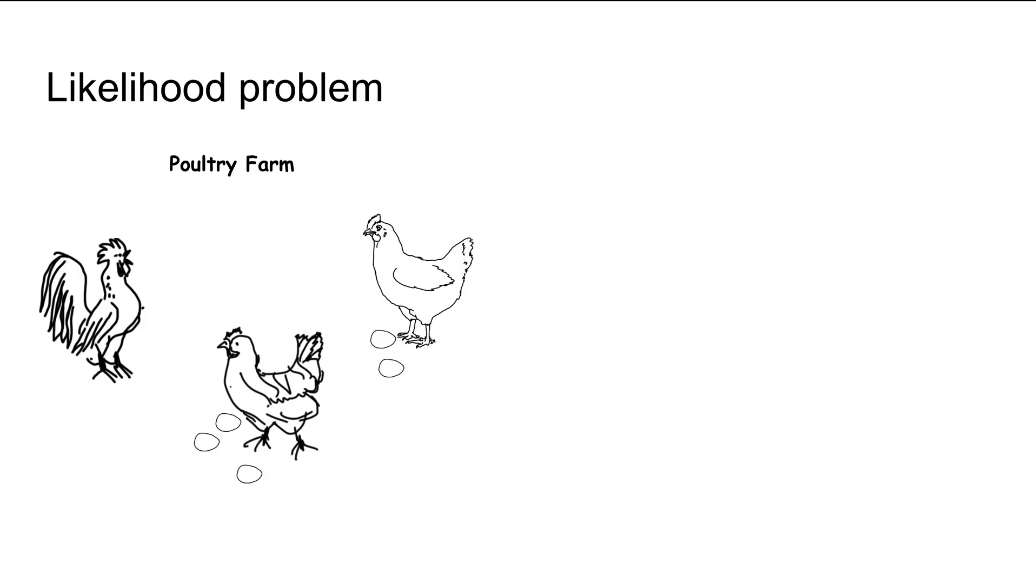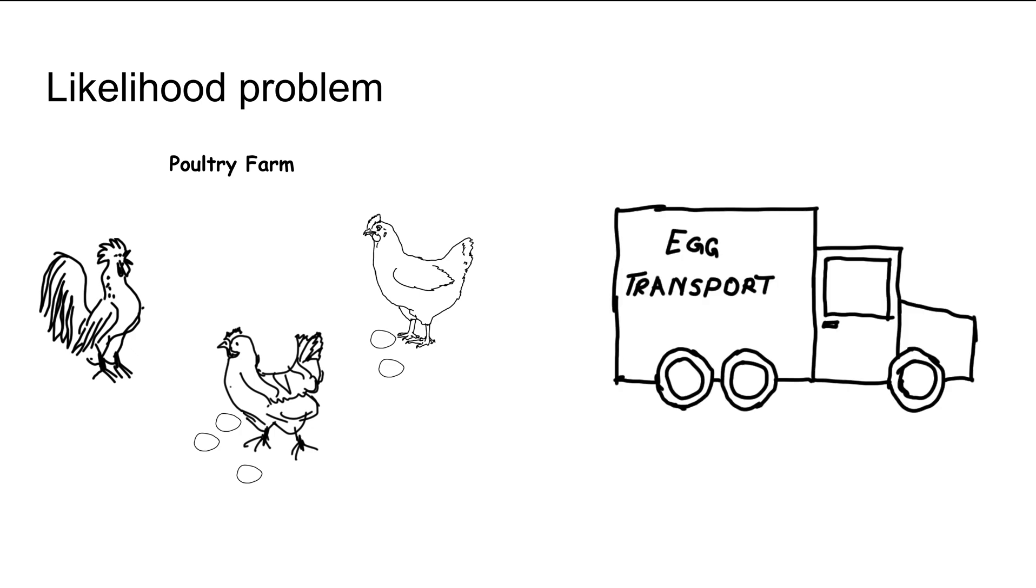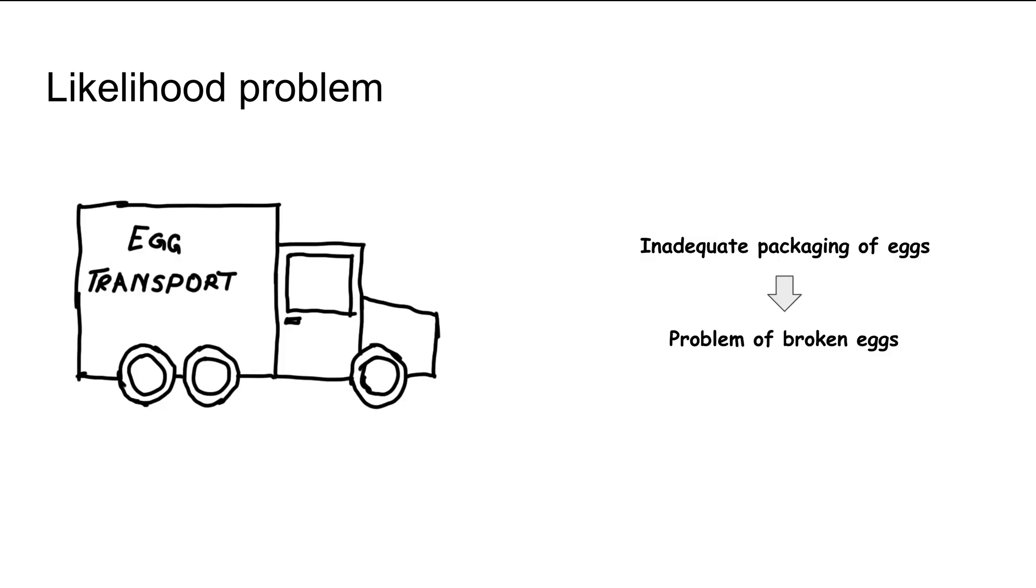In Part 1, let's imagine a poultry farm where the company has to collect all the eggs from the farm and transport them to the market. They're packed in packaging material that they already have, but there's a problem: by the time the eggs reach the customer, some of them break.